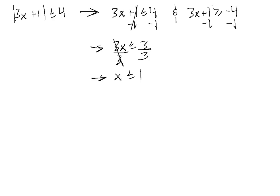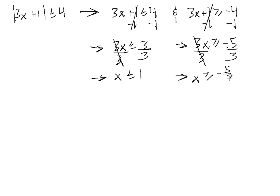Let's go ahead and solve the second one. Subtracting 1 from both sides, we have 3x is greater than or equal to minus 4 minus 1, which is minus 5. We can divide both sides by 3, so we have x is greater than or equal to minus 5 thirds. We can write these two endpoints in inequality notation as x is in between minus 5 over 3 and positive 1. That's our solution in inequality notation.